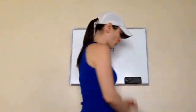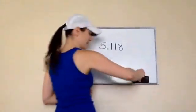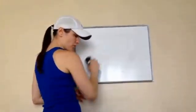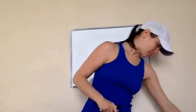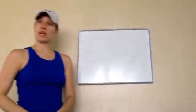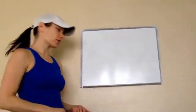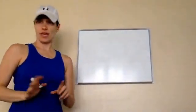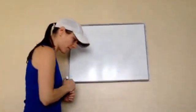Okay, fifth grade lesson 118. This is on using zero as a placeholder, and then also we're going to learn about dividing decimal numbers by ten, hundred, and a thousand.